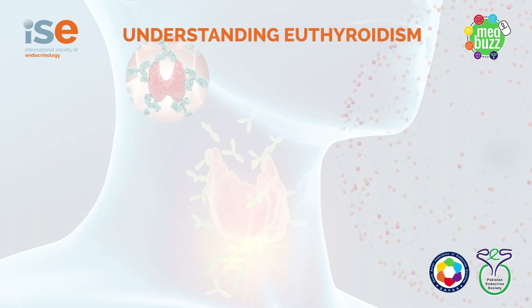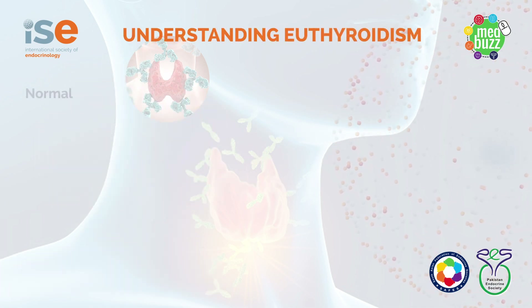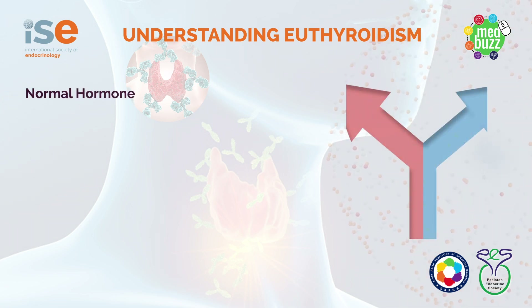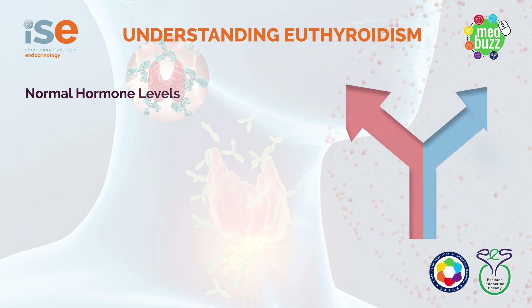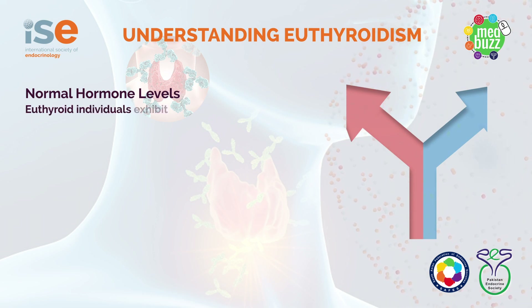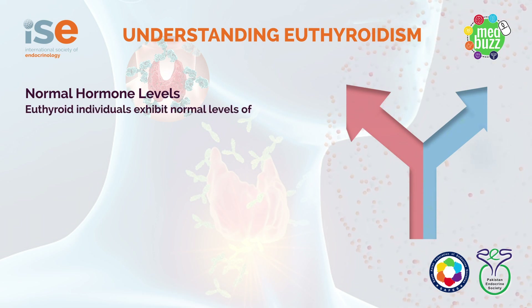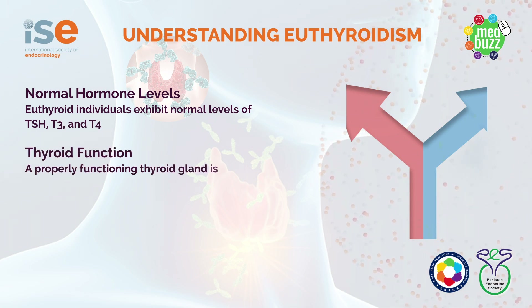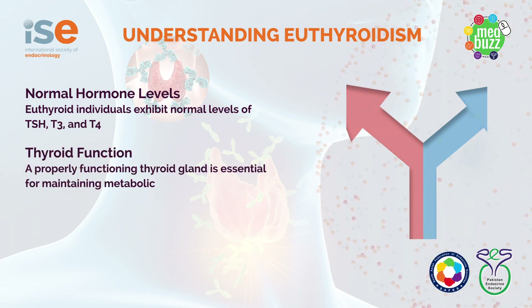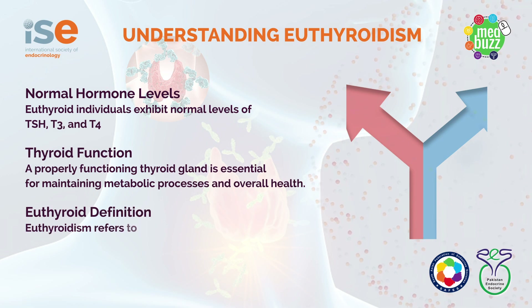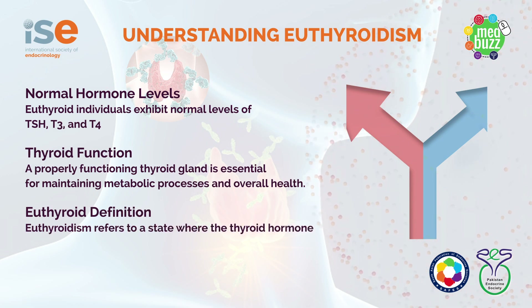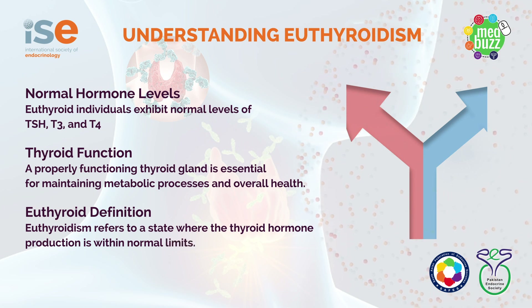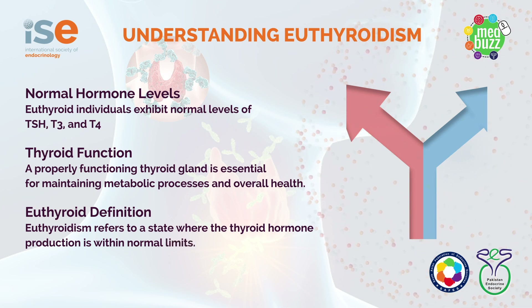A patient who is euthyroid has normal levels of thyroid stimulating hormone and normal levels of T3 and T4 thyroid hormones. A properly functioning thyroid hormone axis is essential for normal metabolic function and overall health, and euthyroidism refers to the state where thyroid hormone production is within normal limits.